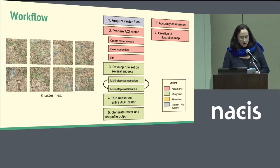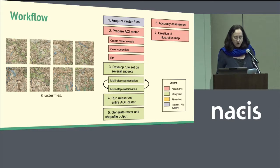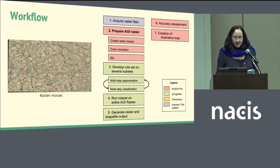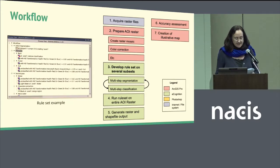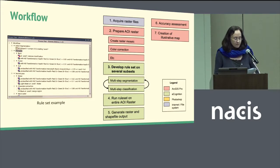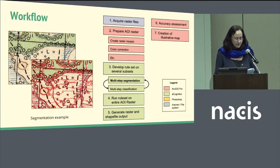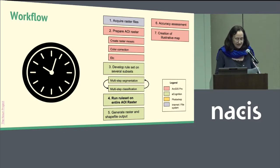The workflow I followed was the following. I first acquired the eight individual raster files, then prepared the full raster for the entire area of interest, which included creating a raster mosaic and performing a simple color correction in ArcGIS Pro. I developed and tested the ruleset in eCognition on several raster subsets — small snippets taken from the large raster. The ruleset included several segmentation rules to create the objects and several series of classification rules. When the ruleset was ready, the next step was to run it on the entire raster, which was a major computing process and took about two and a half days to complete.